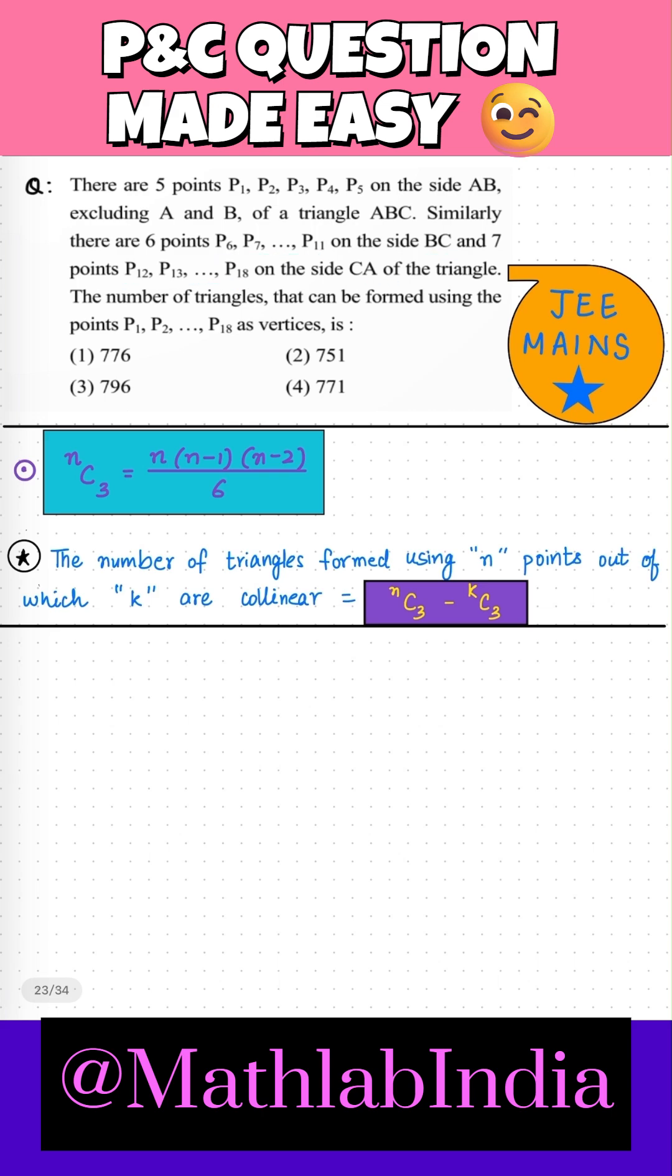So we have 5, 6 and 7 points on the sides AB, BC and AC respectively. And then he is asking about the number of triangles that can be formed using P1 to P18.